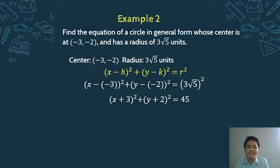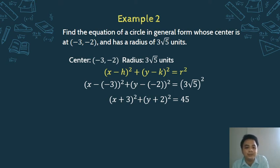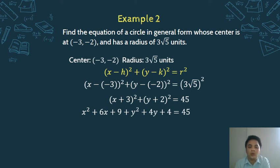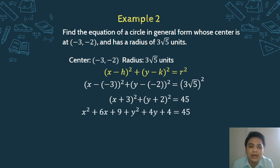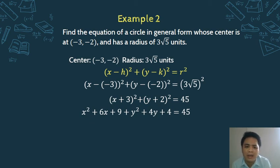We now have the standard form: (x + 3)² + (y + 2)² = 45. But we're not done yet because the required answer is general form. So let us transform this to general form by expanding the binomials — as covered in Part 2 of this series.